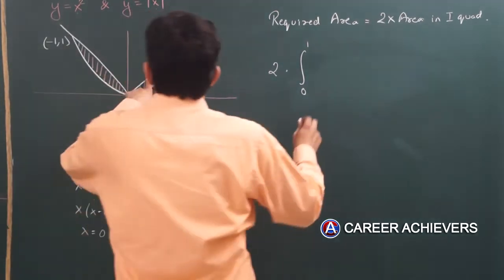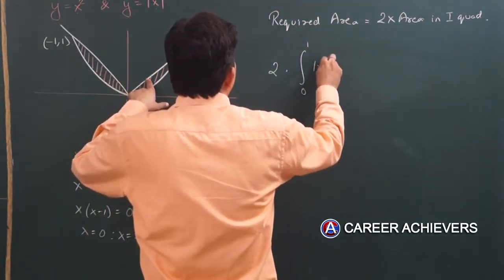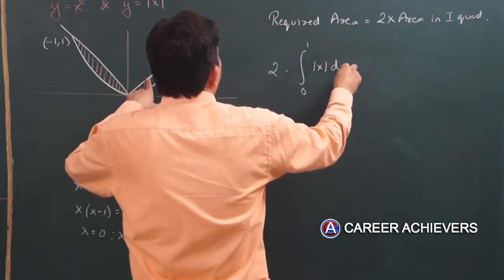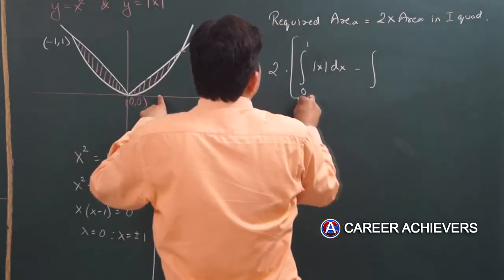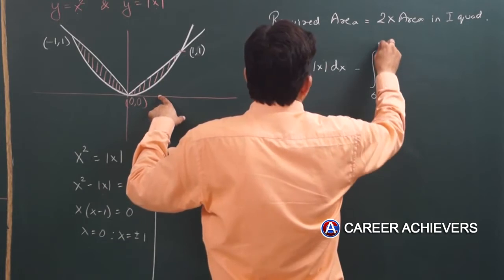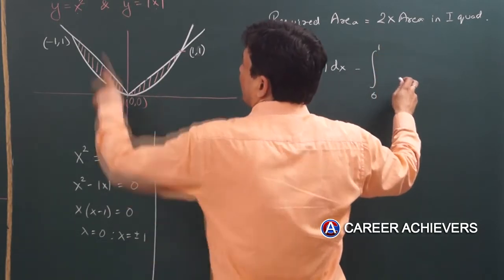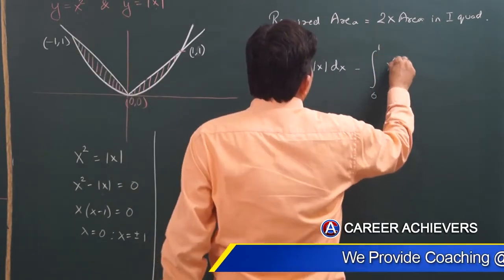Line ko, line yaani mod of x ko, or phir kisko minus karke kisko. Zero to one, equation of parabola which is y equals to x square.